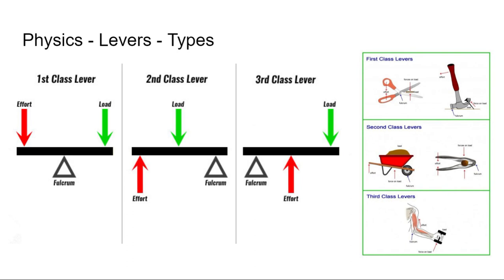The second class lever is kind of like a wheelbarrow. The wheel is the fulcrum, and your load is in between where you hold it and the fulcrum. The load being between the fulcrum and your effort still gives you mechanical advantage. Both the first and second class levers give you mechanical advantage — meaning you're putting in less force to get out more force. Of course, you have to put in more distance, because total power is conserved. You're always sacrificing either how much you move or how much force you get.